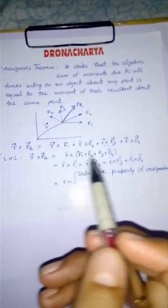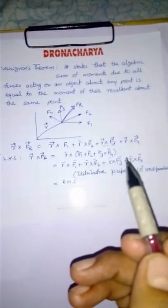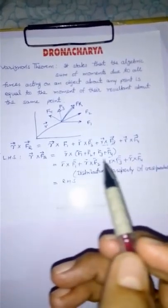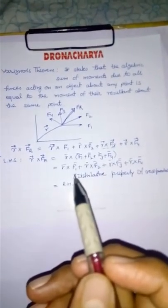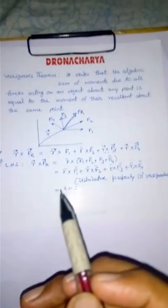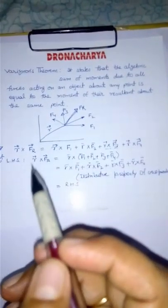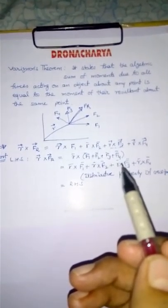So this can be written like this by distributing this product, and this is nothing but what is there on the right hand side. So this is a very simple way to prove Varignon's theorem.